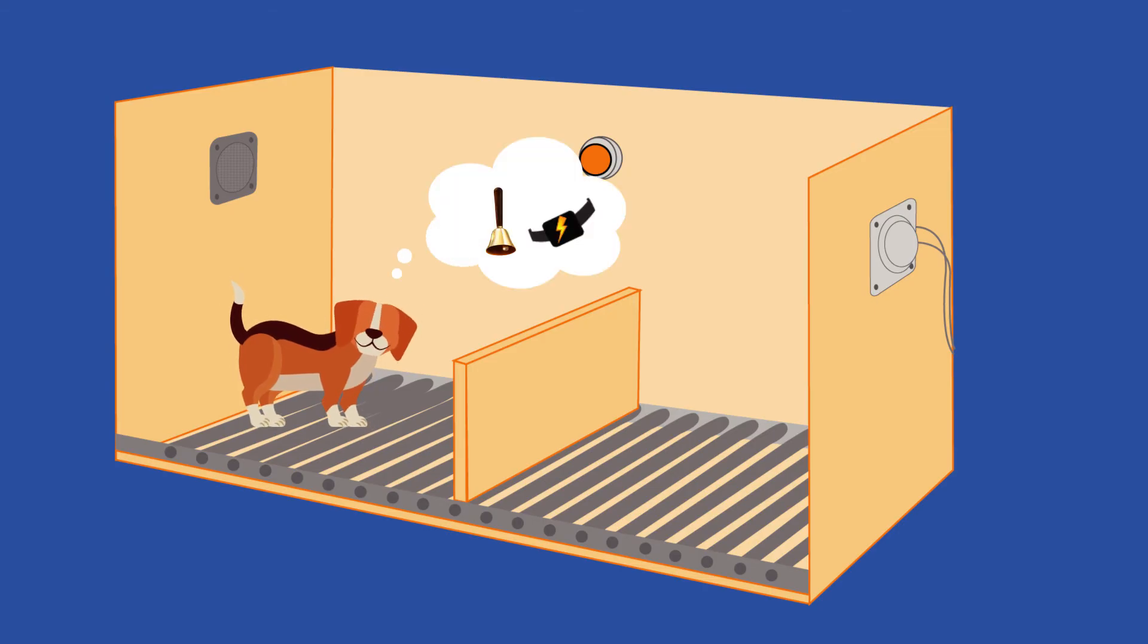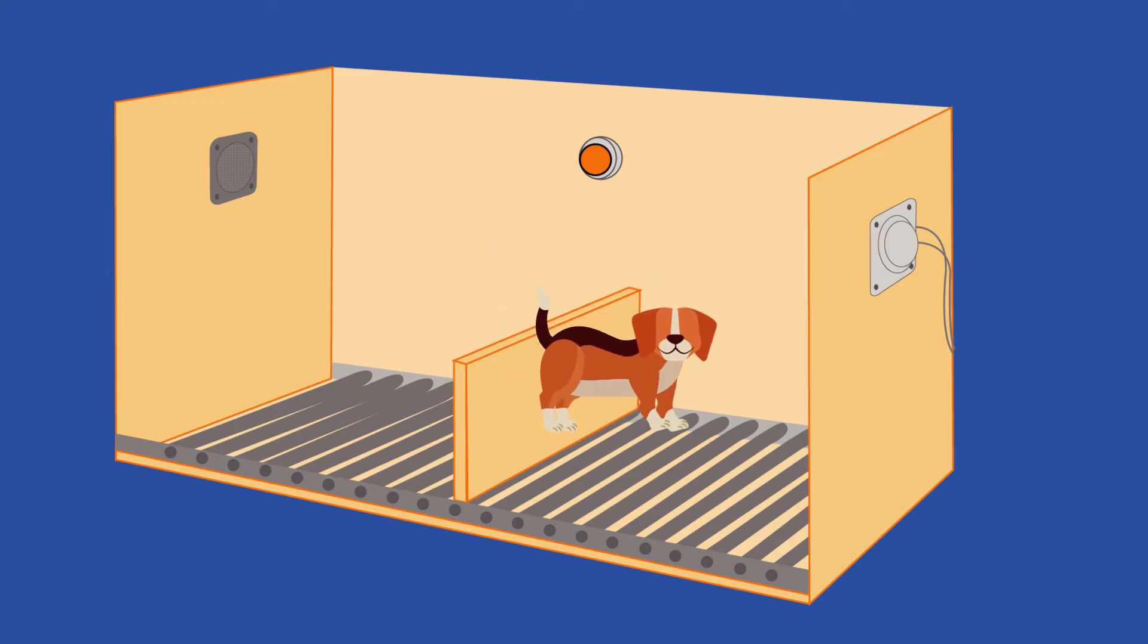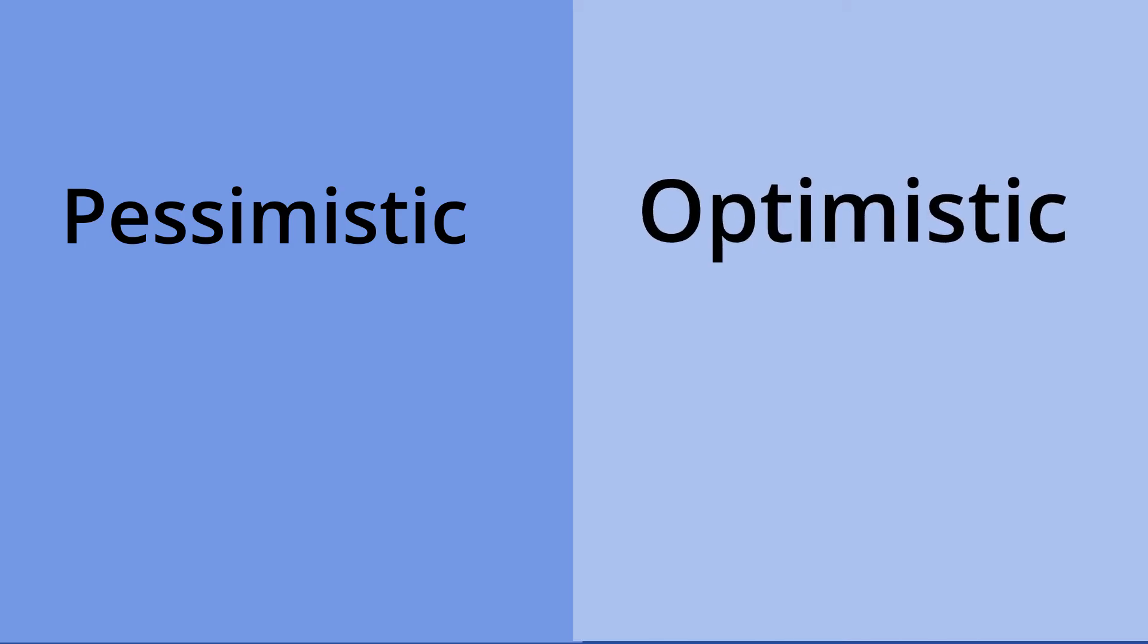But not every one of those dogs did lie down. Some still jumped the fence despite being test subjects in the first half of the experiment. Seligman later theorized that whether someone experiences learned helplessness has to do with the strength and type of their explanatory style.